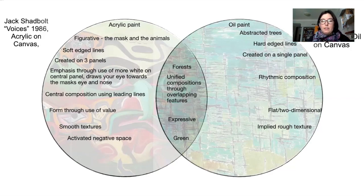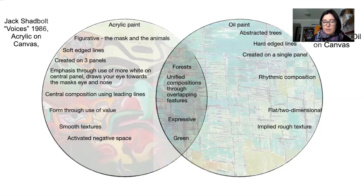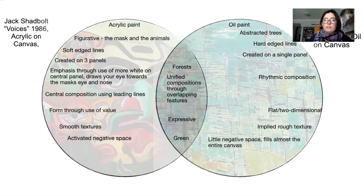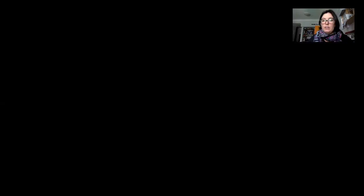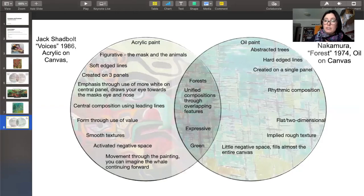There is very activated negative space throughout Shadbolt's piece — the creatures layer and overlap one another, really filling the voids, so no part feels unused. Yet from the X-composition — the X structure of the mask — we know there is a foreground and a background, with that tree line as the background. Nakamura has very little negative space; he fills almost the entire canvas with his lines. There's movement through Shadbolt's painting — you can imagine the whale kind of continuing forward — whereas Nakamura's doesn't have that same sense of movement, but it does have a sense of rhythm.